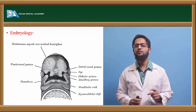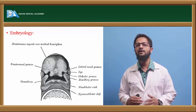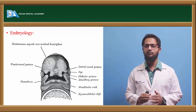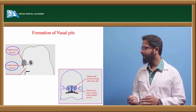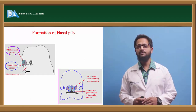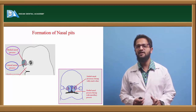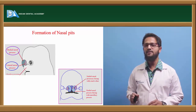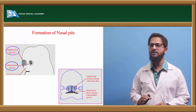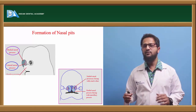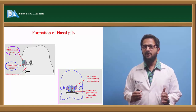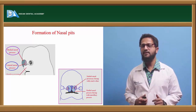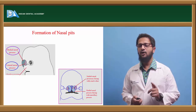At this stage, the stomodium is covered superiorly by the frontonasal process, laterally by the maxillary process, and inferiorly by the mandibular process. The two mandibular processes from either side start growing towards each other and ultimately fuse, resulting in the formation of the lower jaw and the lower lip. The ectoderm overlying the frontonasal process shows two bilateral localized thickenings called nasal placodes. These placodes sink and result in the formation of nasal pits.